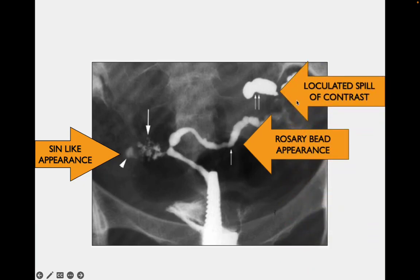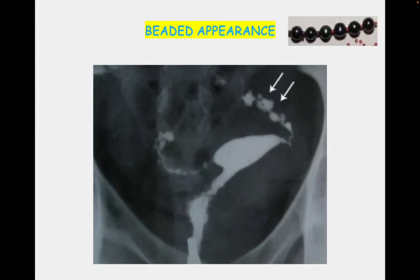Here you can see the loculated spill of contrast. It becomes loculated because peritubal adhesions do not allow the contrast to have a free peritoneal spill, leading to the appearance of loculated spill. This is the typical picture of a patient suffering from genital tuberculosis. The rosary bead appearance — the alternating dilation and constriction of the fallopian tube — is again shown here.